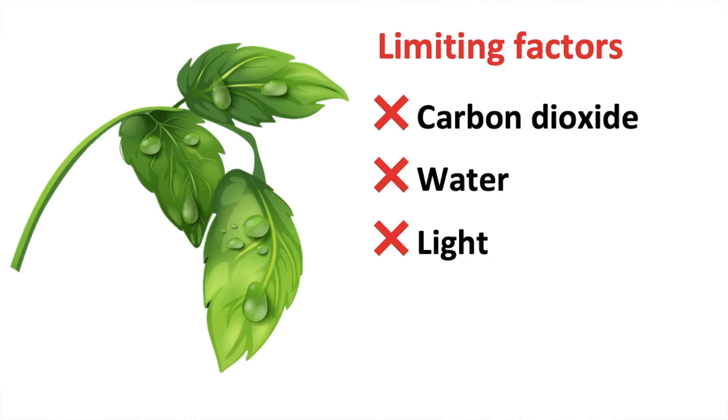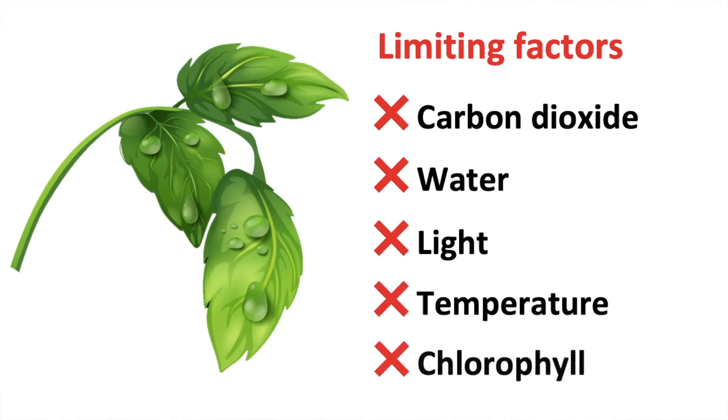Other factors that affect photosynthesis are the temperature and the amount of chlorophyll in leaves. So, if the temperature is too high, then enzymes will denature. And if there is less chlorophyll in the leaves, then this means that less light energy can be absorbed. Ultimately, both will result in a lower rate of photosynthesis. Thanks for joining us today.